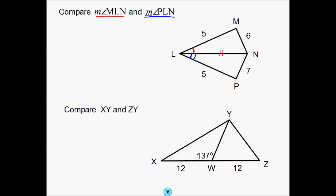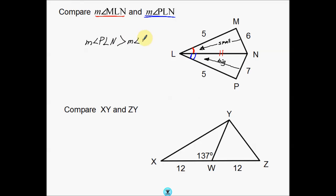Now I'm going to compare them. As I look at these, 6 is going to be the small side, making red my small angle. 7 is the big side, so that makes blue my bigger angle. So what that means is that the measure of angle PLN is larger than the measure of angle MLN. We're using these third sides — the 6 and the 7 — to figure out which angle is bigger and which is smaller.